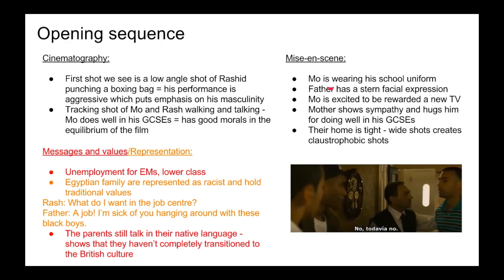In the mise-en-scene, Mo is wearing his school uniform, which shows that he's only 16 or 17 and has just passed his GCSEs. When Rash and Mo come back home with his friend Izzy, he brings a TV as a gift. The father has a stern facial expression, showing how sceptical he is about where Rash got the money since he has no job. Mo is excited to be rewarded a new TV, but the mother shows sympathy and hugs him for doing well in his GCSEs while being sad that he can't keep the TV. Their home is also tight, with wide shots that are quite claustrophobic as many people are in them.